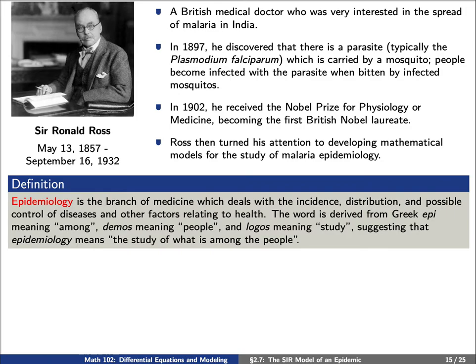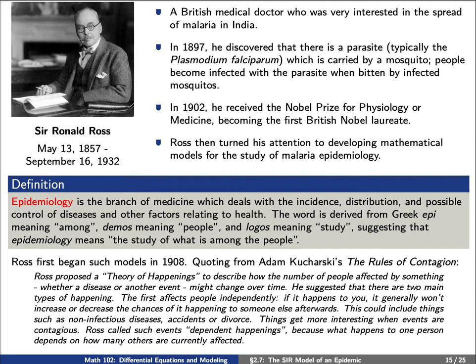Ross first began studying such mathematical models in 1908. There's a wonderful book, which just came out a couple of years ago, by Adam Kucharski, called The Rules of Contagion. Ross proposed a theory of happenings to describe how the number of people affected by something, whether a disease or another event, might change over time. He suggested that there are two main types of happening. The first affects people independently. If it happens to you, it generally won't increase or decrease the chances of it happening to someone else afterwards. This could include things such as non-infectious diseases, accidents, or divorce.